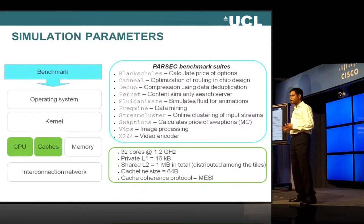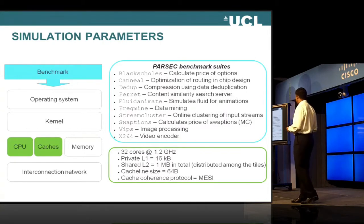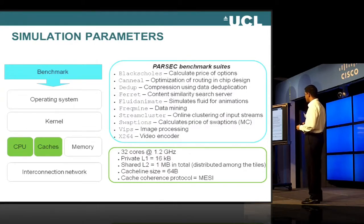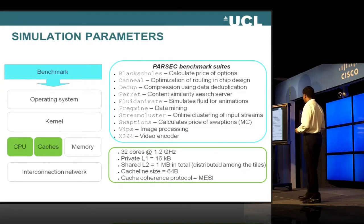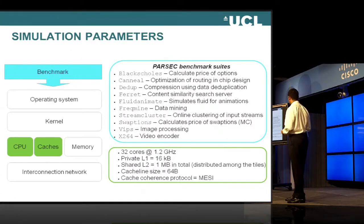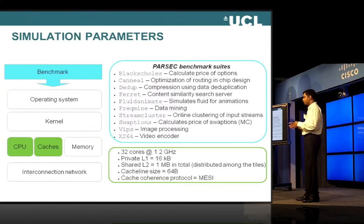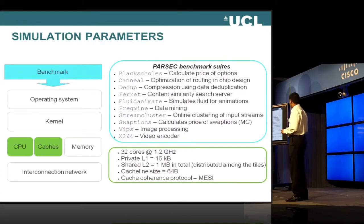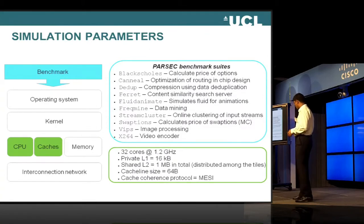Since we are considering the interaction between the network and the cache coherence protocol, we actually need a full system simulator. We use GEM5, and for our simulation we had the MESI cache coherence protocol. We use a 32-core system and boot Linux, and on Linux we run a PARSEC benchmark suite. Here are 10 of the benchmarks that we actually run.